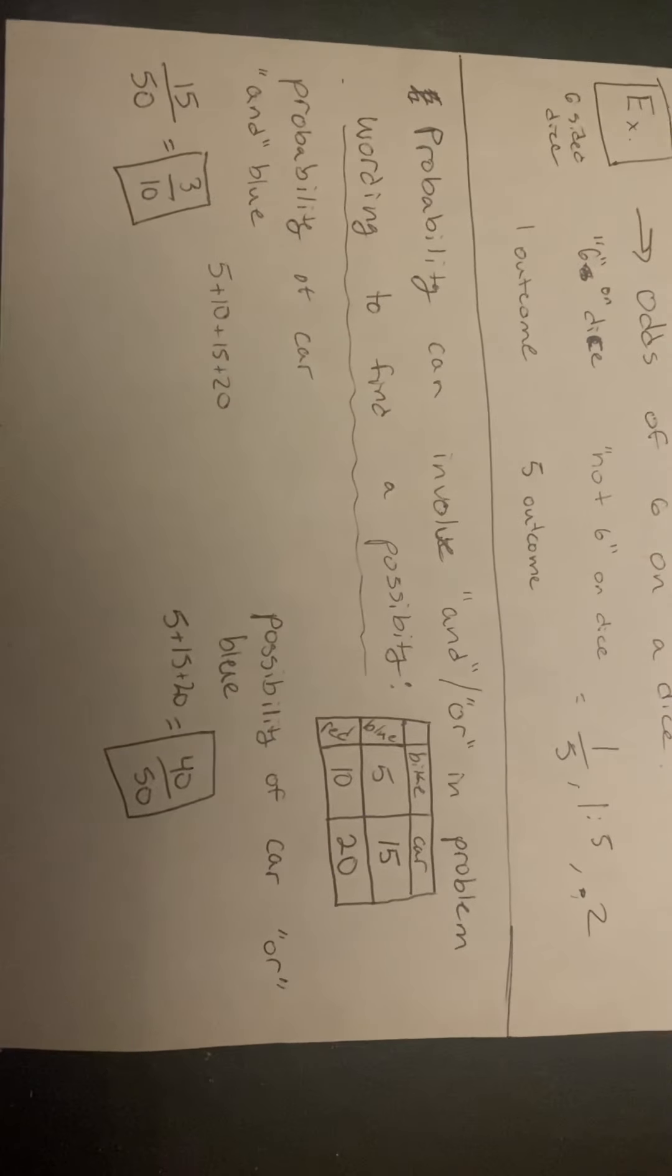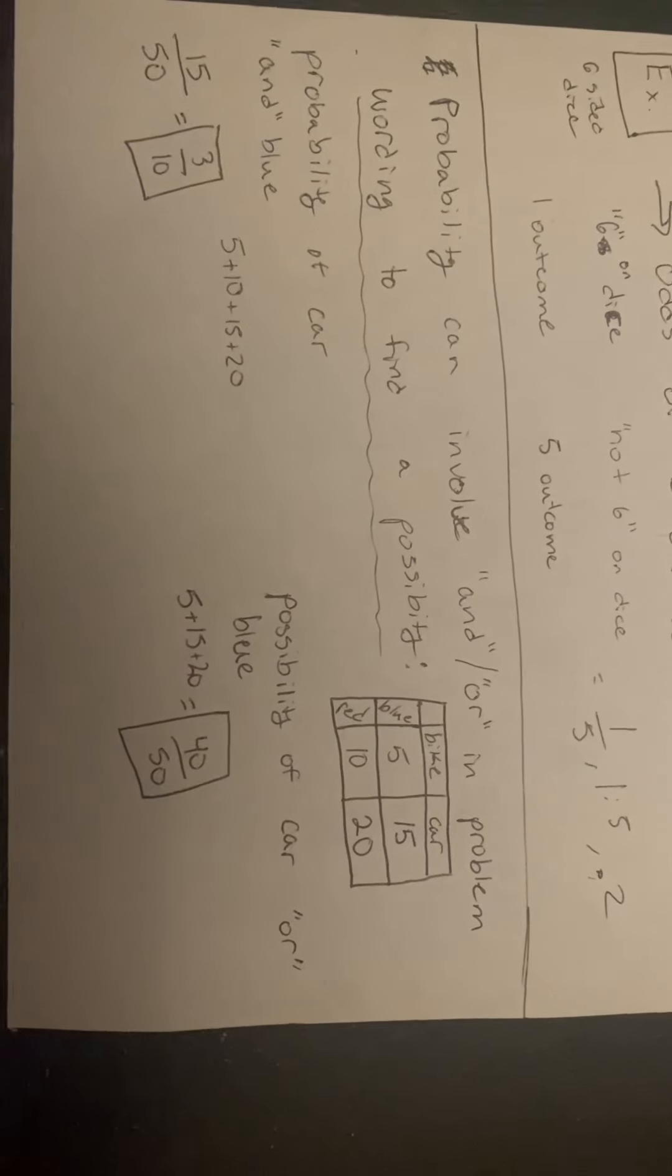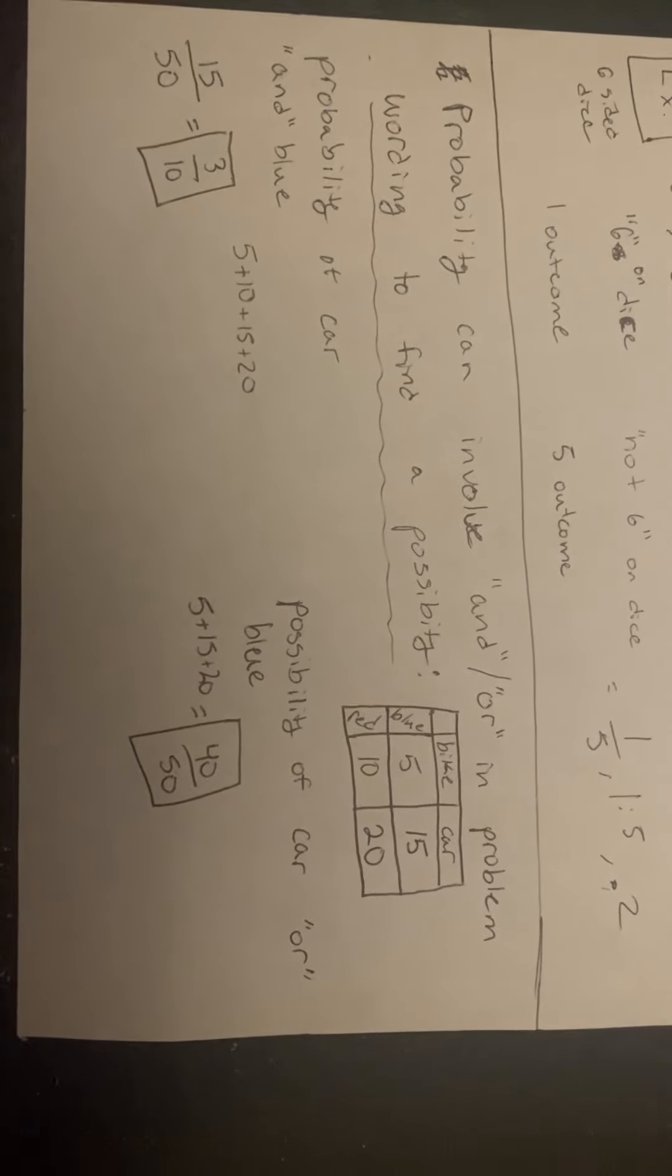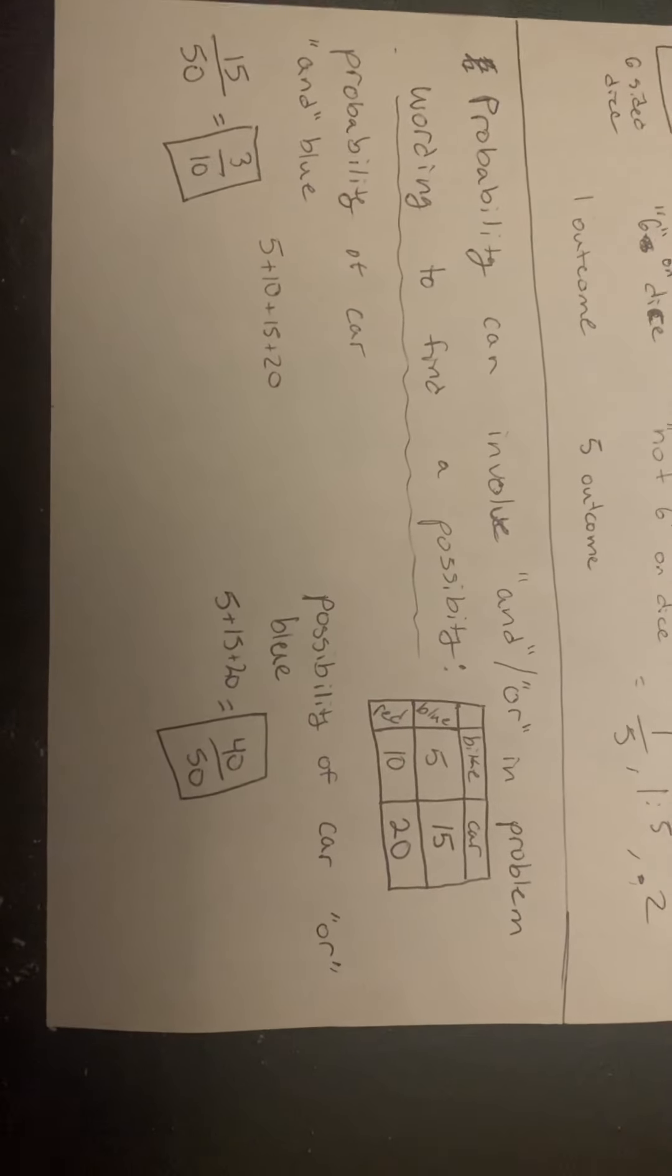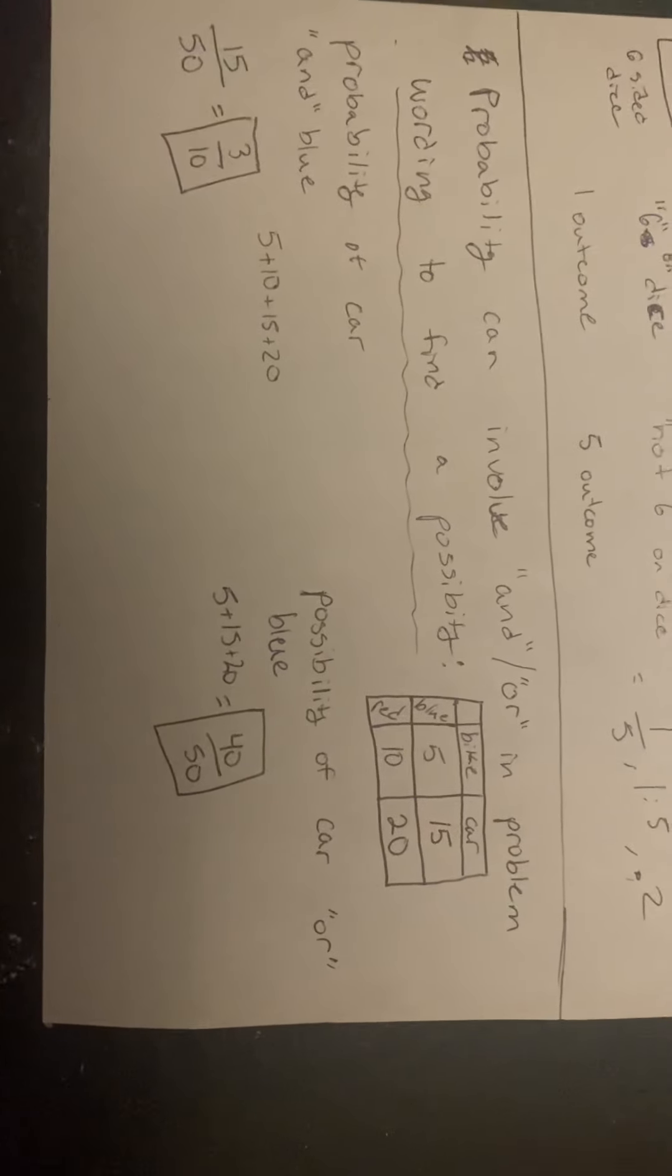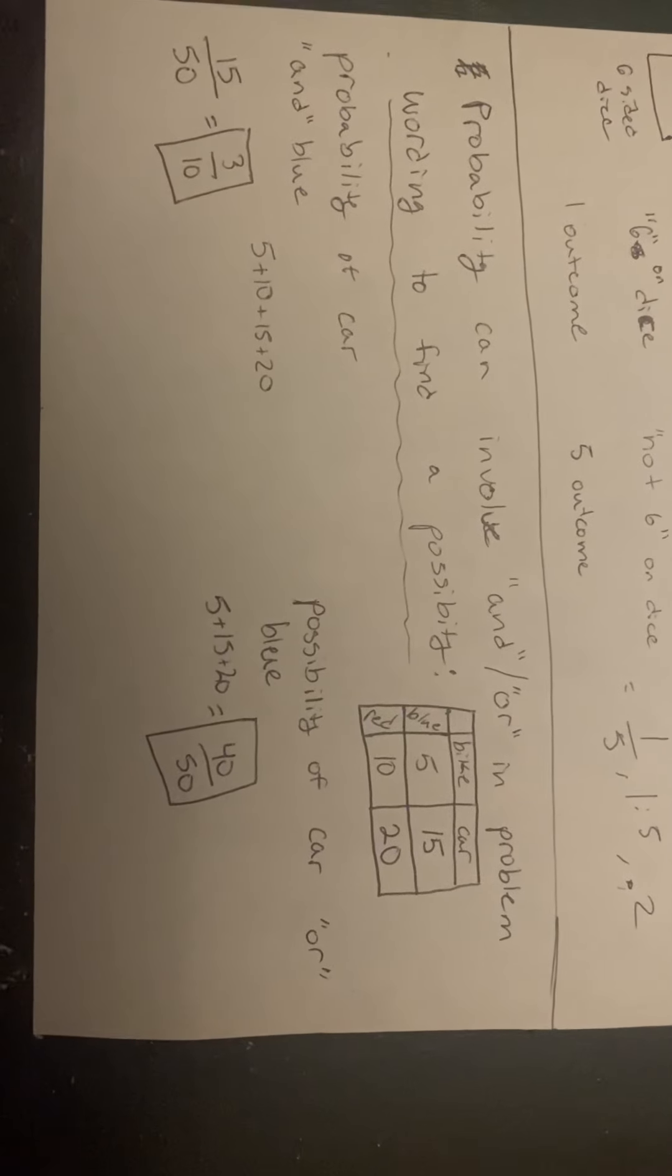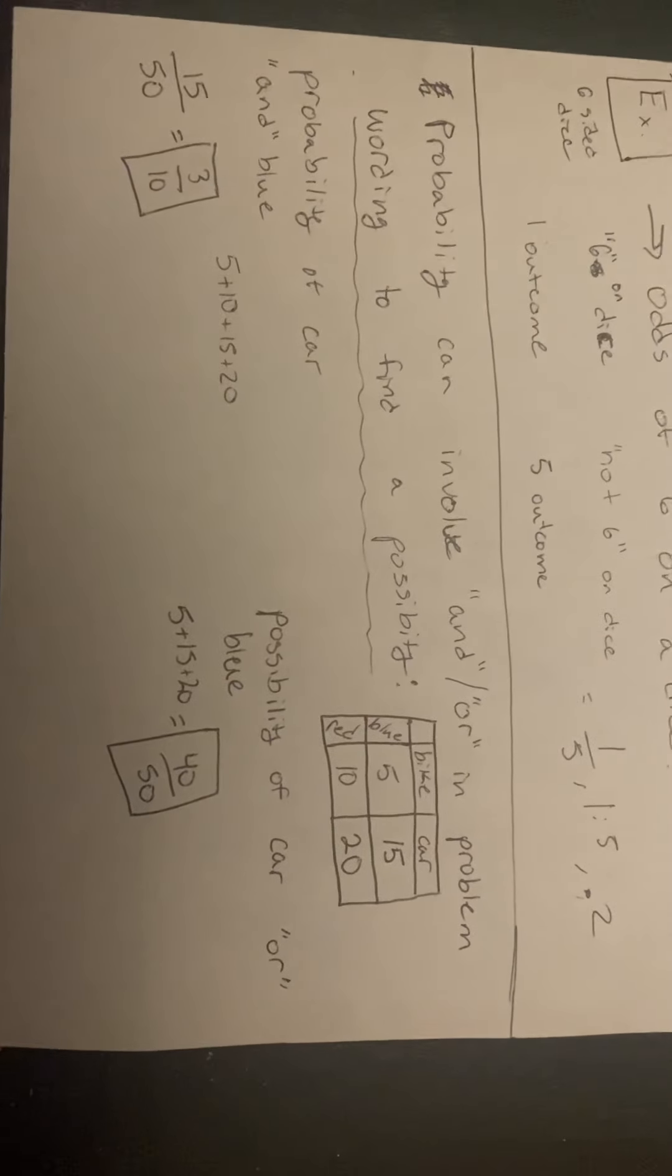But now, as we look at the table values, blue bike and red car can also be included in the possible outcomes because of the keyword 'or' in the question. 'Or' allows the properties to have one or the other, but they don't have to contain both properties.